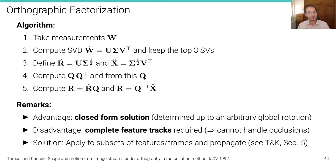So, the algorithm can be applied to subsets of features and frames and then propagate to some form of matrix completion iteratively to fill in the missing entries and still operate on the data. And actually, the data that I've shown you before, the pier data, has already this problem that not all features are visible in all frames. And this has been solved using such an iterative propagation scheme.